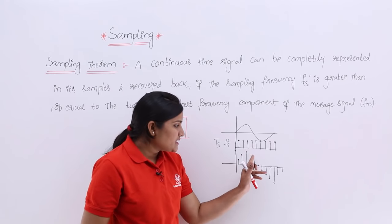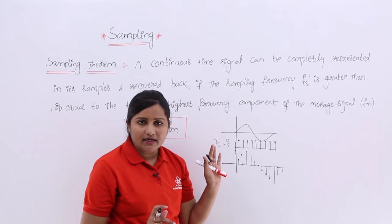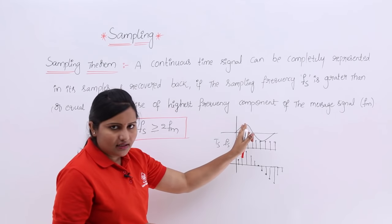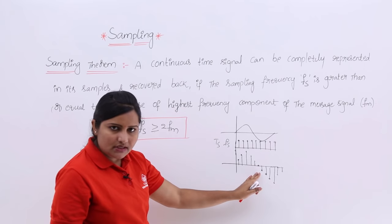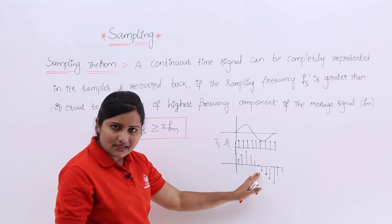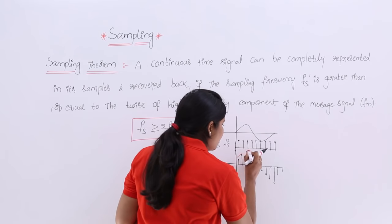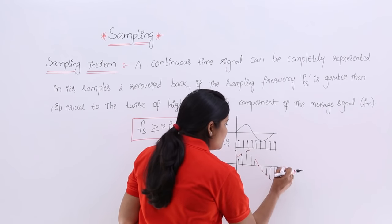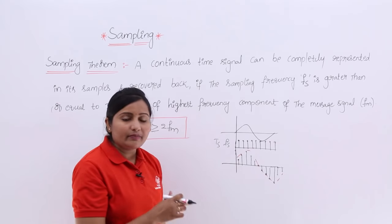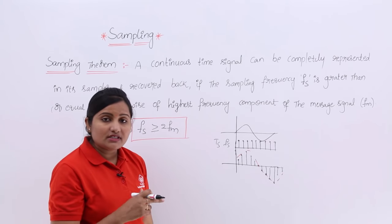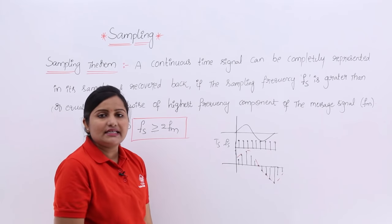You are going to get the same signal shape which you have in continuous form — that means a continuous signal can be completely represented in its samples. If you want to reconstruct your continuous signal, you can trace it from the sampled signal. This is called the sampled signal — the continuous signal after conversion into discrete form.